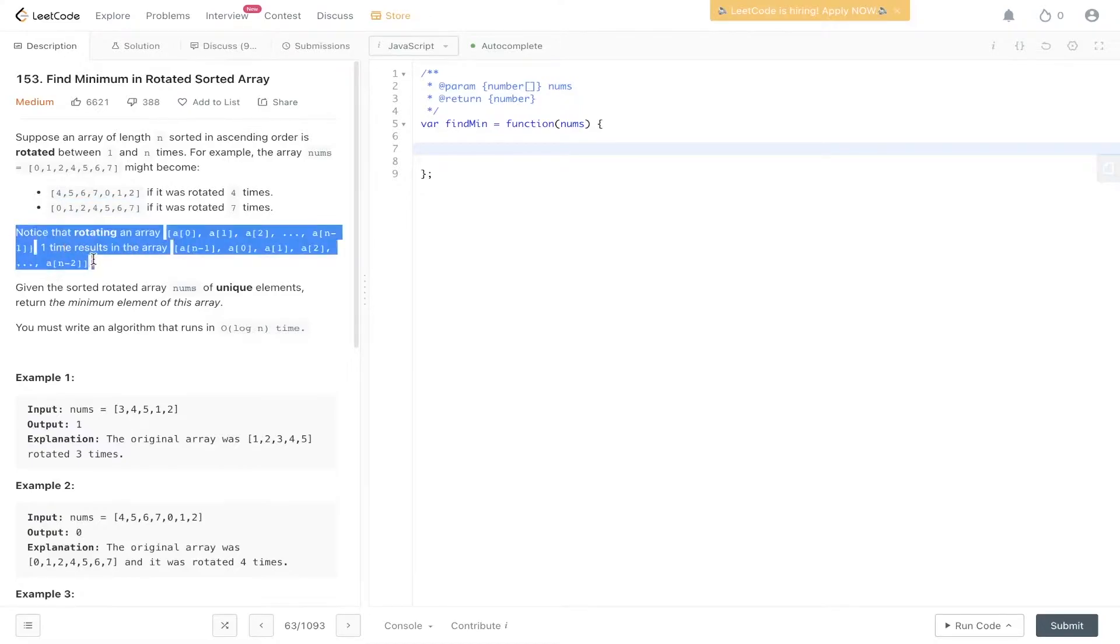There's information about it being rotated, but what we need to do is: given the sorted array nums of unique elements, return the minimum element. You must write an algorithm that runs in O(log n) time. This information about rotation is pretty much irrelevant—all we need to know is the nums array and that we need O(log n) time complexity. We know it's a sorted array, which means binary search.